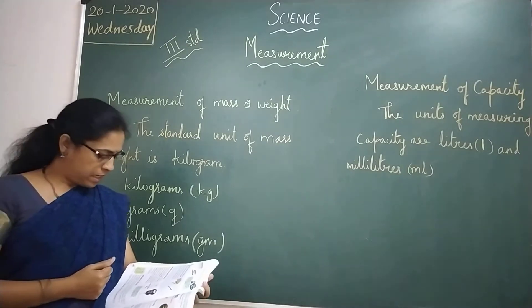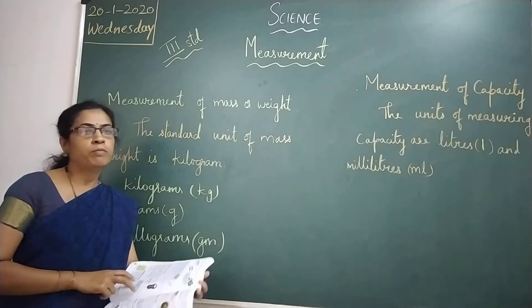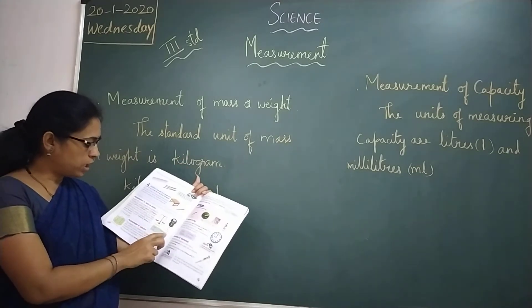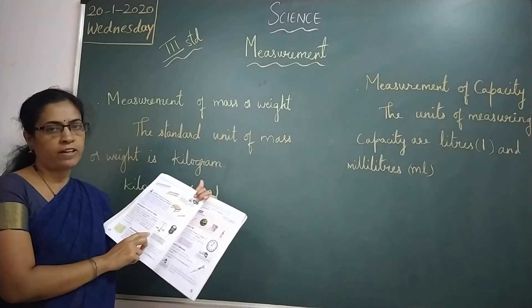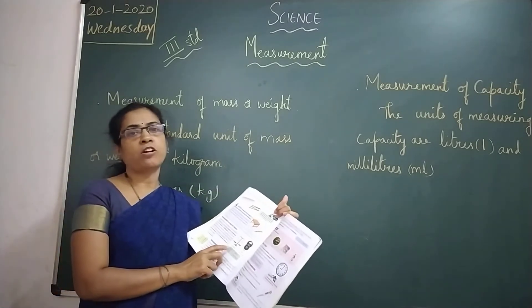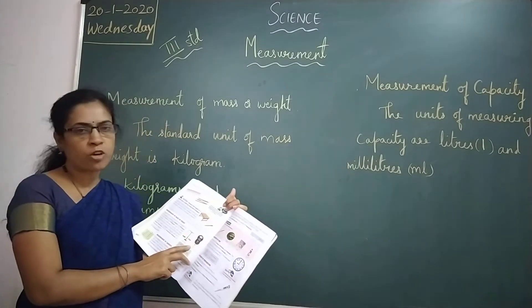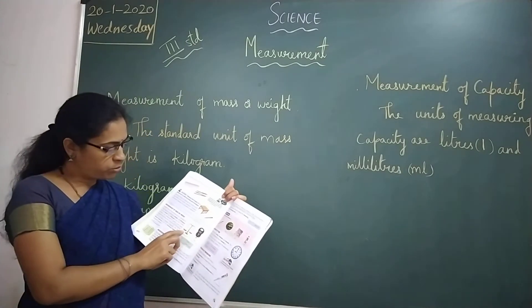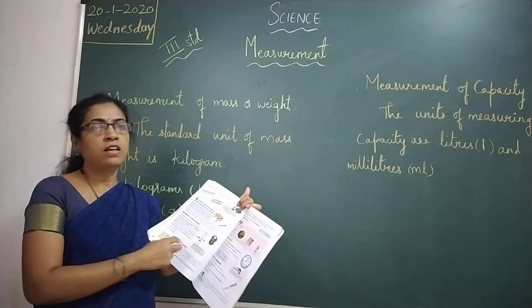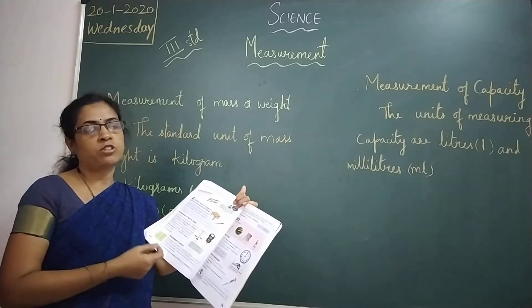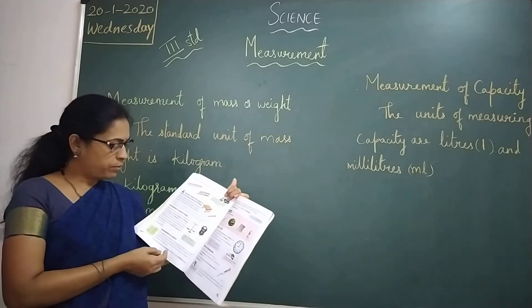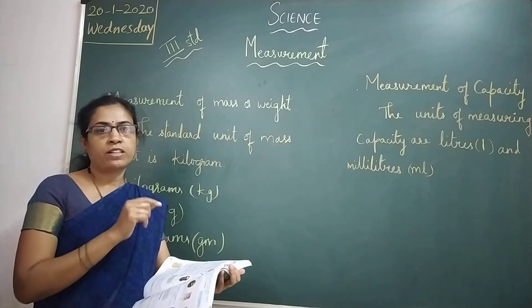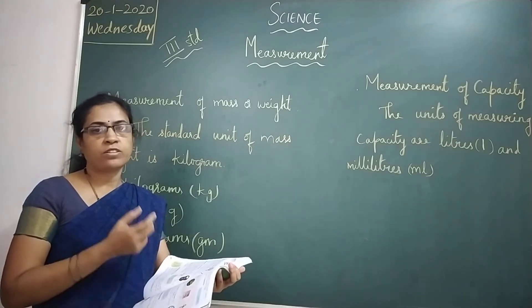We use a beam balance and an electronic balance to measure weight. You can see them in the picture here. When you go to shops, you can see an electronic balance — the shopkeeper uses it. In older times, a beam balance was used. Even now, in vegetable markets, vendors use a beam balance with different kinds of weights on it.